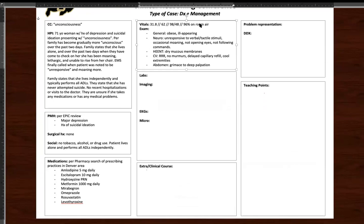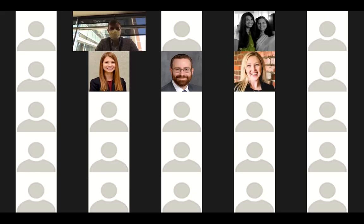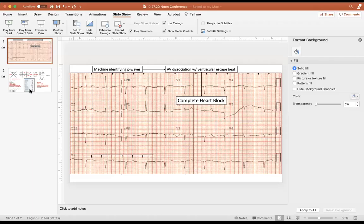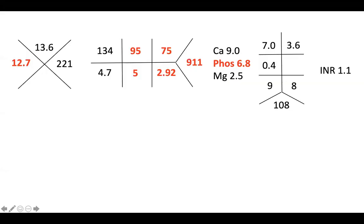In true fashion, I'm just going to throw every single lab that this person had at you to simulate what it feels like to admit one of these people from the ED. She has a leukocytosis. She has a large anion gap of 34 with a bicarb of 5. BUN is 75. Creatinine is 2.9. Her sugar is 911. That's a real number. It's not 911 for fun. Her phosphorus is 6.8. LFTs are normal. Her INR is normal as well.